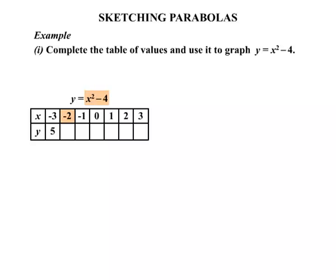Now putting -2 in there, (-2)² = 4, and 4 - 4 = 0. Putting -1 in there, (-1)² = 1, and 1 - 4 = -3. Putting 0 in, 0 - 4 = -4. Putting 1 in, 1² = 1, and 1 - 4 = -3.